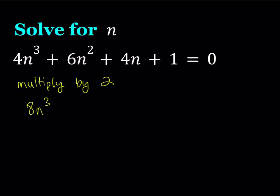That's going to give me 8n³ + 12n² + 8n + 2 = 0. Since multiplying by 2 doesn't really change the roots - it doesn't introduce any roots or take away any of the roots - it is okay to do. The roots of this equation are going to be the same as the original one.